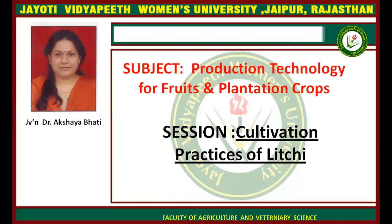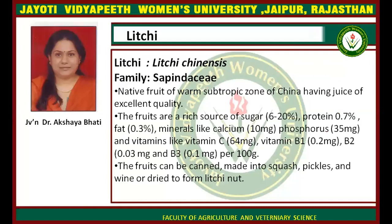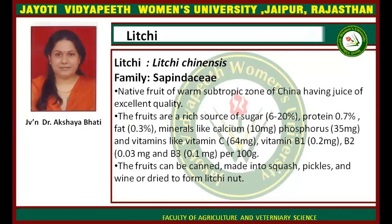Lychee is botanically known as Lychee chinensis from the family Sapindaceae. The fruit is found in the warm subtropical zone and originated from China. The juice is of excellent quality. It is a good source of sugar, approximately 6 to 20% sugar, protein 0.7%, fat 0.3%, minerals like calcium, phosphorus, and vitamins including vitamin C, vitamin B1, and B2.